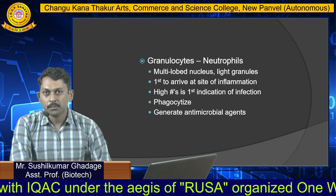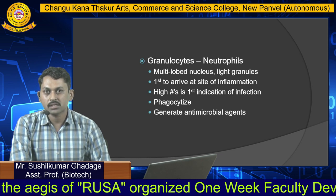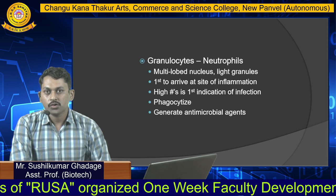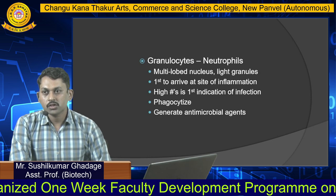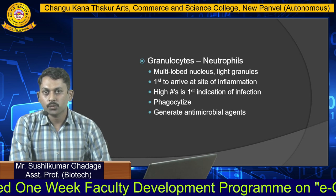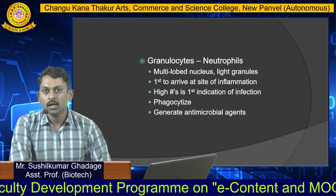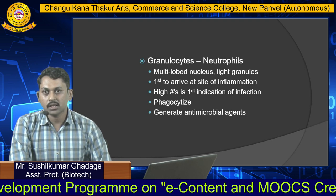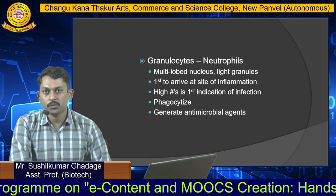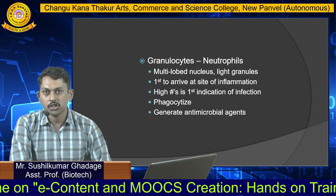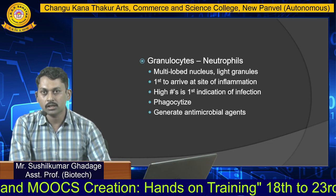Neutrophils are the first cells to arrive at the site of inflammation. Their concentration generally increases in cases of infection, so a high number of granulocytes indicates infection. The role of neutrophils is phagocytic in nature, and they contain antimicrobial agents.